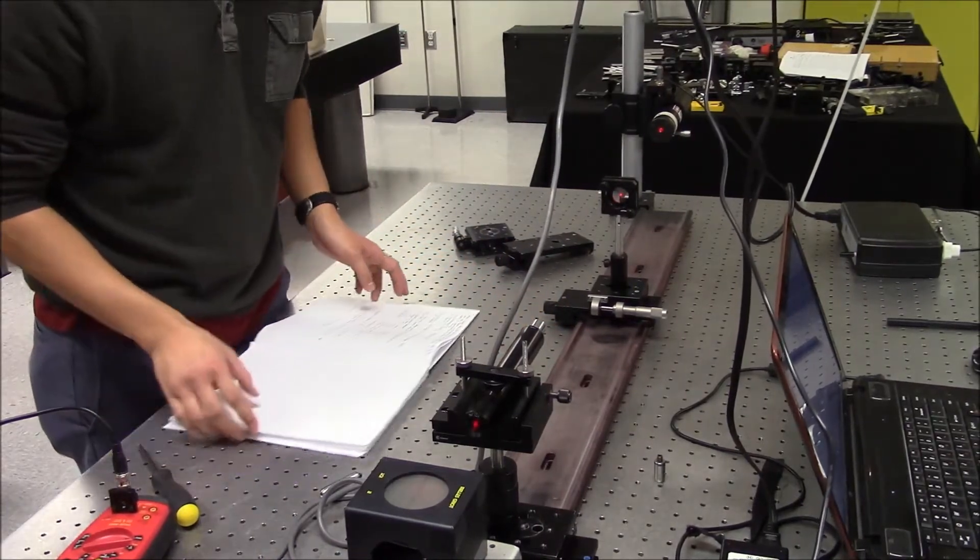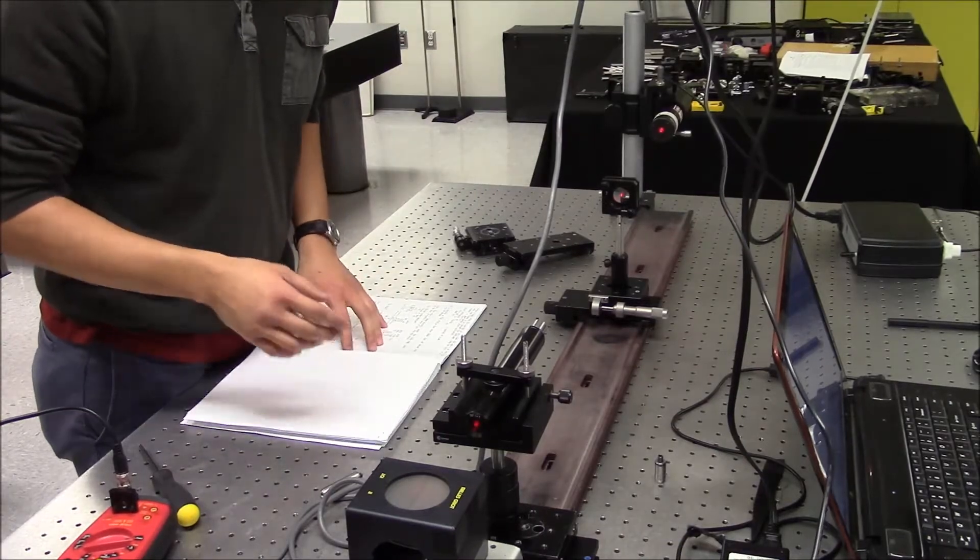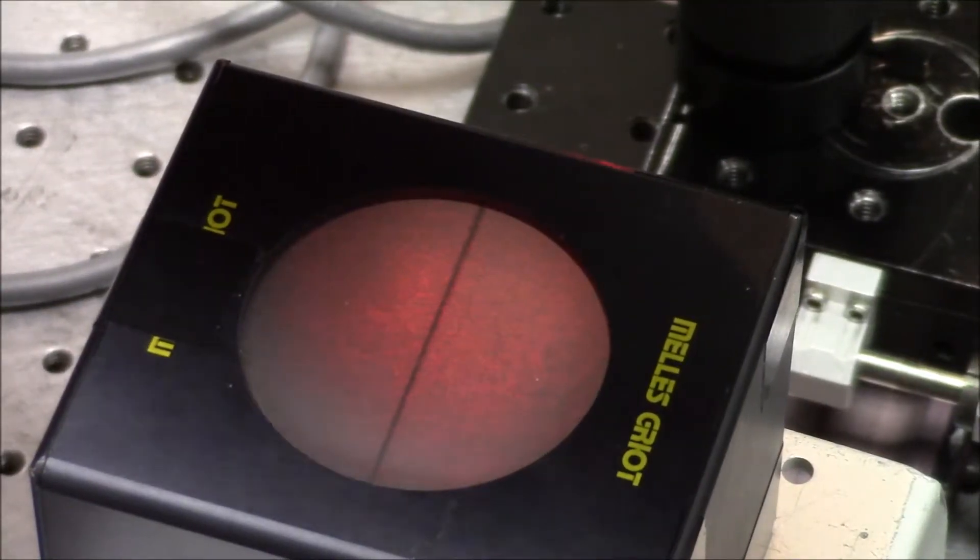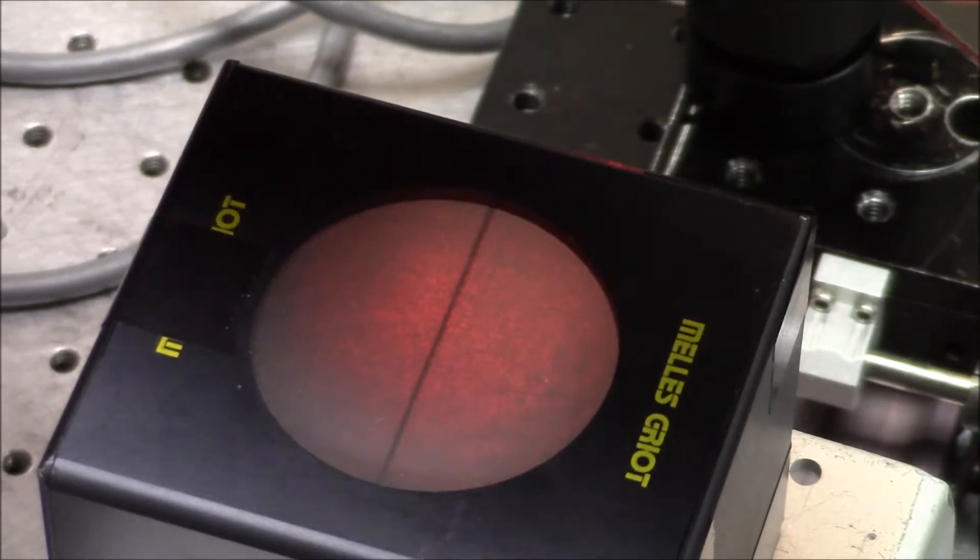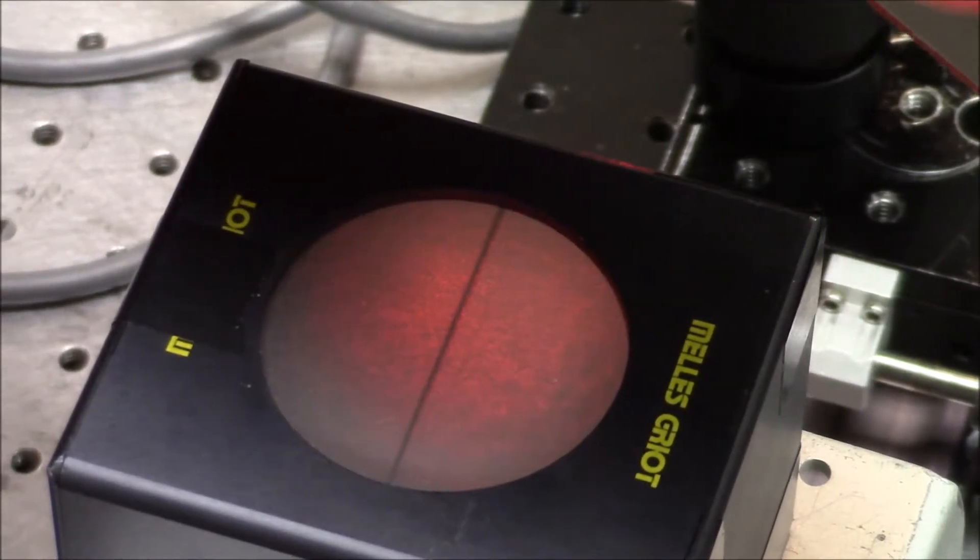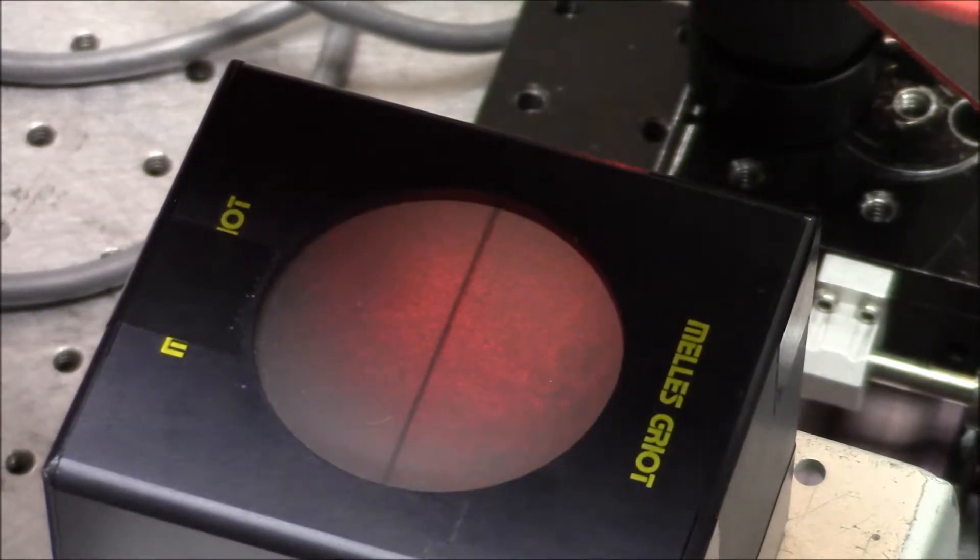We attempted to use a wedge shear plate to test the collimation after the microscope. But because the beam was not expanded enough, we were not able to get the interference pattern we needed on the wedge shear plate to test collimation.